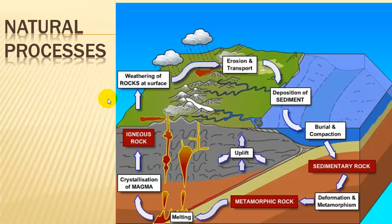This is still the rock cycle, just showing where things are happening. We'll start with igneous rock. Igneous rock is formed from the crystallization of magma, and magma is just melted rock — it's melting deep within the earth. As it rises, it cools and forms igneous rock.